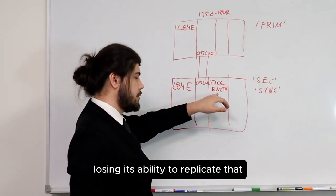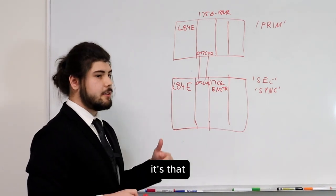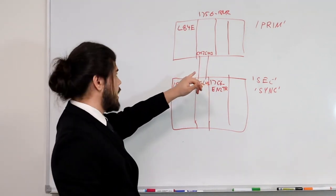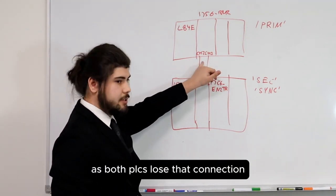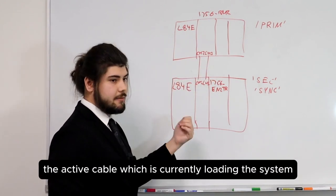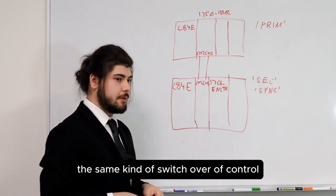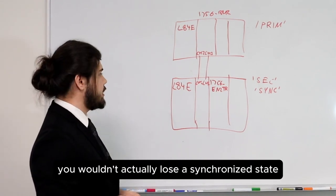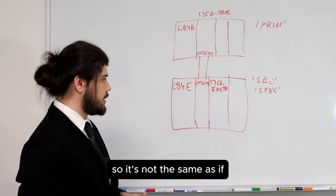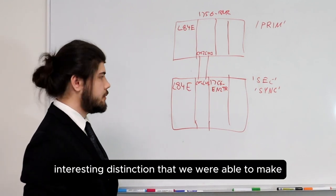As a result of losing its ability to replicate, it would become disqualified. It's not necessarily that they've got to communicate to each other — it's that they've got to communicate to the same field device. If I were to unplug a cable and both PLCs lose that connection, it won't perform a switchover event. A switchover event only occurs if I unplug the active fiber optic cable currently loading the system — it would switch over to the redundant cable. You wouldn't actually lose synchronized state because the system can still perform its cross-loading operations properly. So it's an interesting distinction between losing an external communication connection versus losing the fiber optic cross-load link.